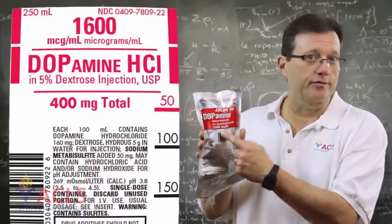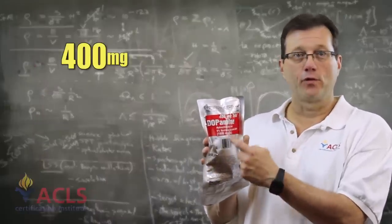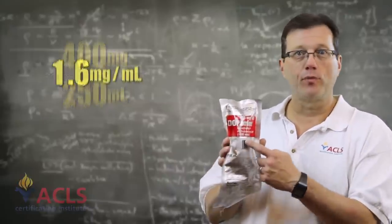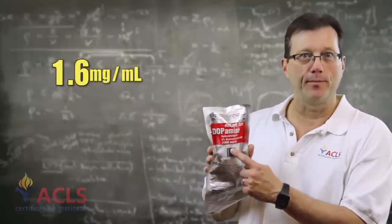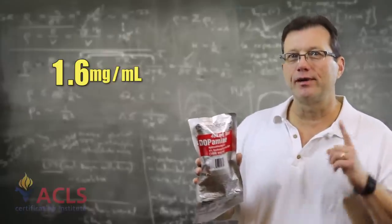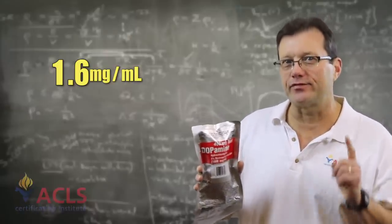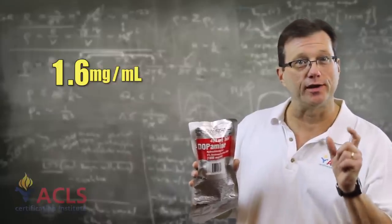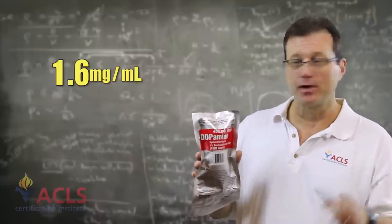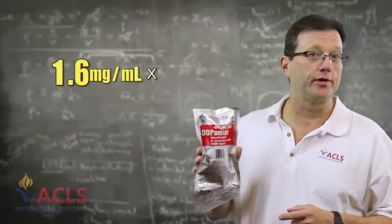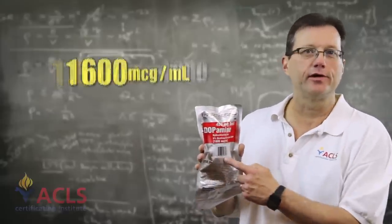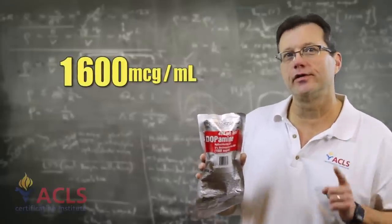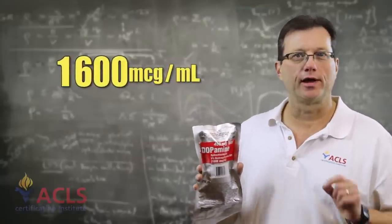If the concentration wasn't on the label, I could still figure it out. I take 400 milligrams divided by 250, which gives me 1.6 milligrams per mL. But I'm dosing in micrograms, so I need the same dosing parameters. I multiply that 1.6 by 1,000 and get 1600 micrograms per mL. That's the first thing you calculate: what is my working concentration?